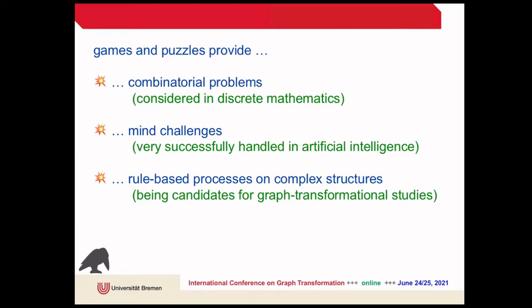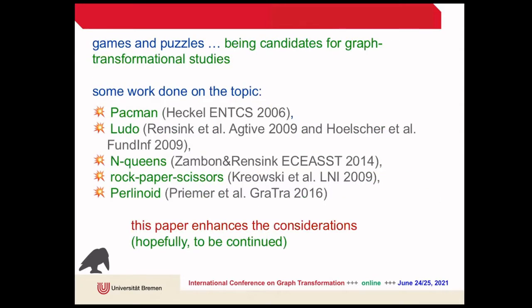But games and puzzles are also rule-based processes in most cases on somewhat complex structures, so this is just the kind of problems we look at in graph transformation. Actually, there's already some work done in this direction: Reiko Heckel had the Pacman example in a tutorial, in AGTIVE 2009 there was a competition on Ludo, and Eduardo and others have studied the N-queens problem and two more. This paper enhances these considerations, and we hope to continue it because from our point of view it is a very beginning of a story.